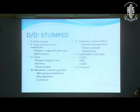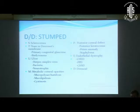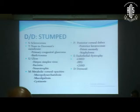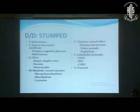P stands for posterior corneal defect, which could be posterior keratoconus, Peter's anomaly, or staphyloma. E stands for endothelial dystrophy, like congenital hereditary endothelial dystrophy and posterior polymorphous dystrophy. D stands for dermoid.